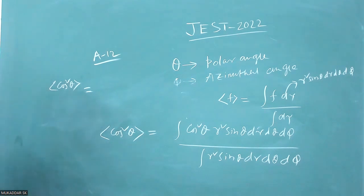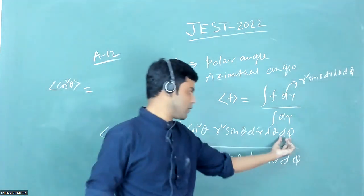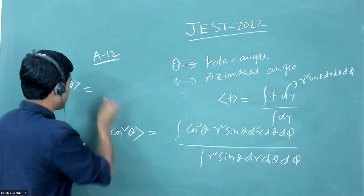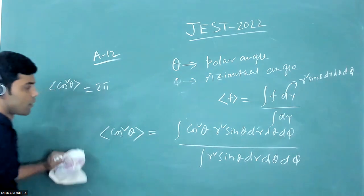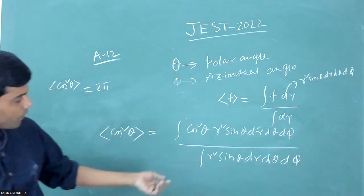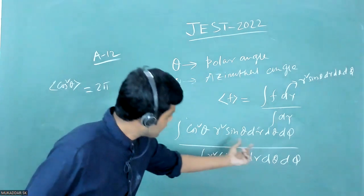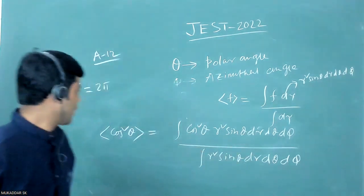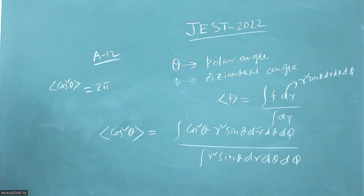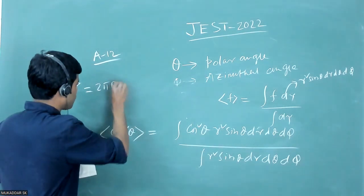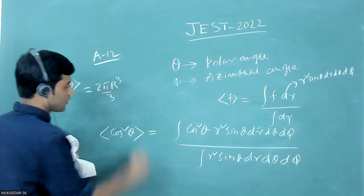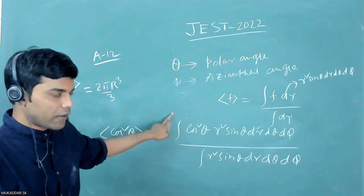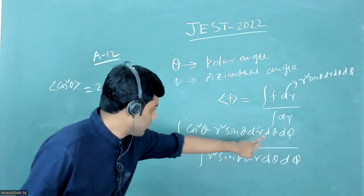Substituting, you will have cosine square theta. The integration over φ with limit 0 to 2π will provide 2π. The integration of r square dr will provide r cube by 3. And you have an integration of cosine square theta times sine theta dθ with the limit of theta from 0 to π.